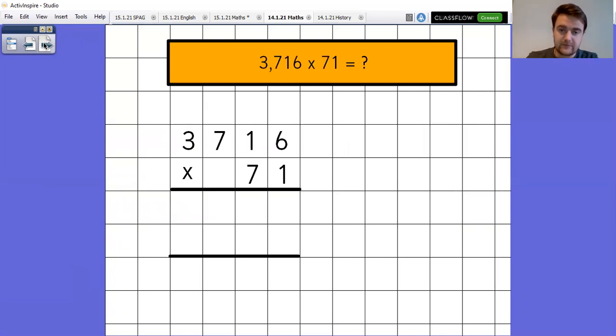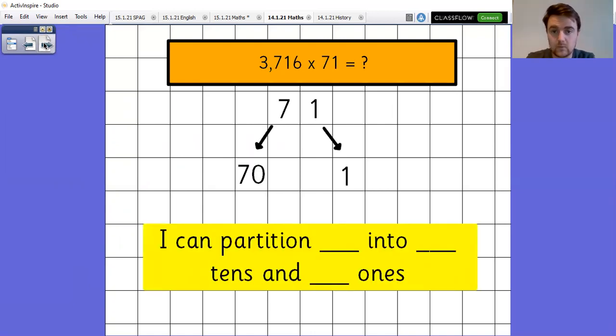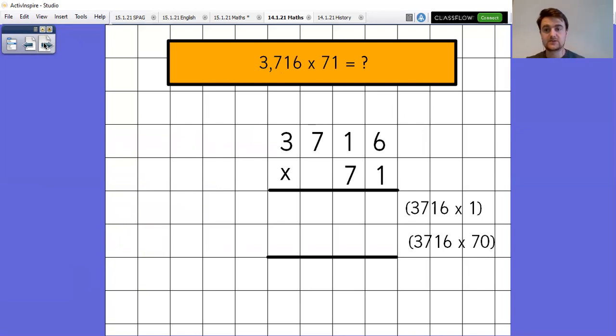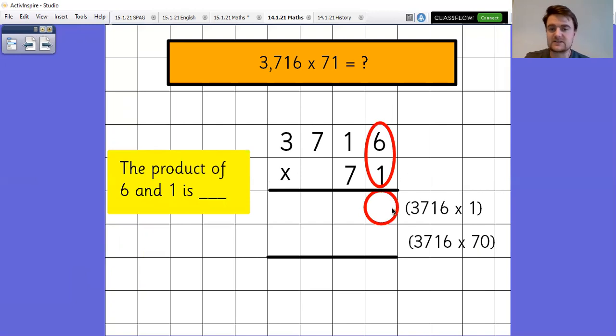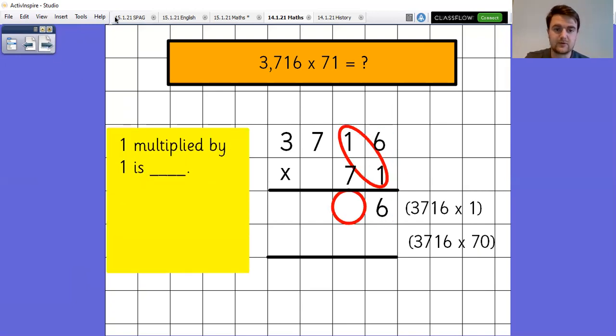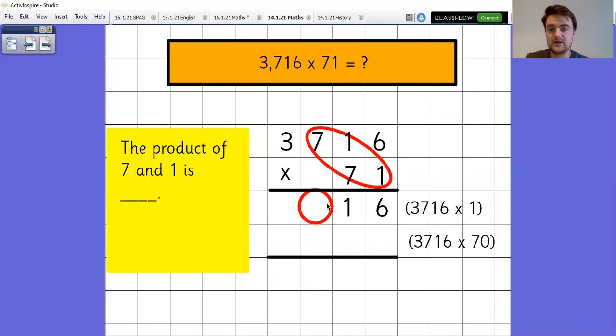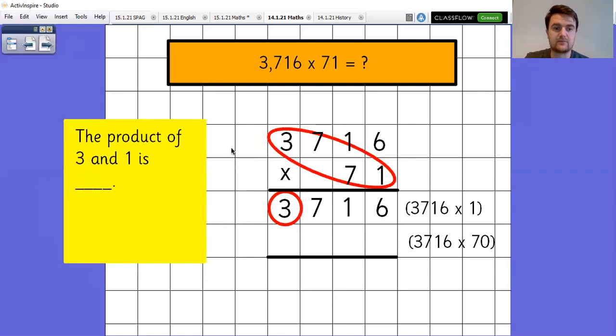OK, so first of all, I'm going to lay out in the column methods and I'm going to partition my bottom number, my two digit number. So 71 is the same as seven tens and one one. Now, what that does as well is that makes that top sum quite easy, because I know 3716 times one is just going to be the same. One lot of 3716 is 3716. But I'll go through it stage by stage so that we can really see that. So the product of six and one is six. So that just goes in there. The product one multiplied by one is one. So that goes in there. The product of seven and one is seven. So that goes in there. And the product of three and one is three. So that goes in there.